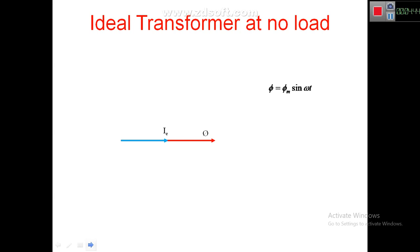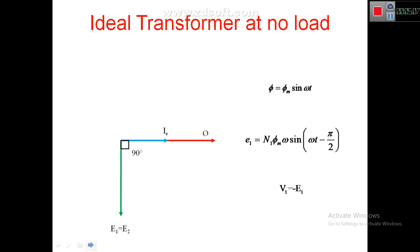According to the EMF equation, we can conclude that EMFs E1 and E2 are 90 degrees lagging from flux phi. This is shown in the phasor diagram where E1 is equal to E2. Since V1 equals minus E1, V1 is 180 degrees apart from E1 and E2. This is the complete phasor diagram of the ideal transformer at no load — only three equations are required to construct it.